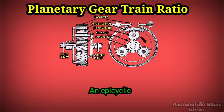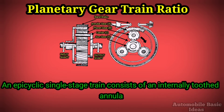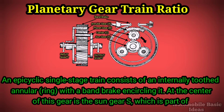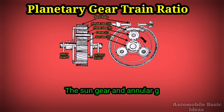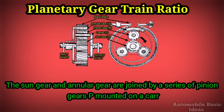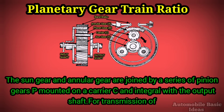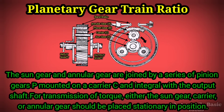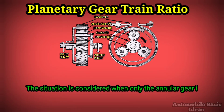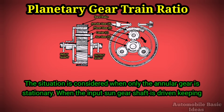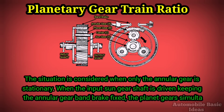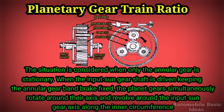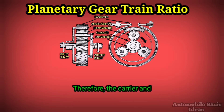Planetary gear train ratio. An epicyclic single-stage train consists of an internally toothed annular or ring gear with a band brake encircling it. At the center is the sun gear S, which is part of the input shaft. The sun gear and annular gear are joined by a series of pinion gears mounted on a carrier C, integral with the output shaft. For transmission of torque, either the sun gear, carrier, or annular gear must be placed stationary. When the input sun gear shaft is driven with the annular gear band brake fixed, the planet gears simultaneously rotate around their own axis and revolve around the input sun gear axis along the inner circumference of the annular gear.